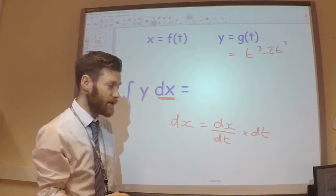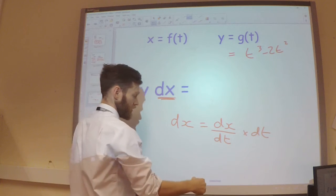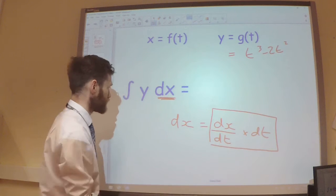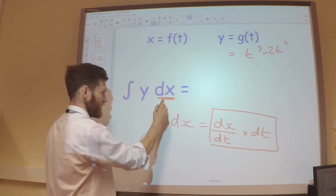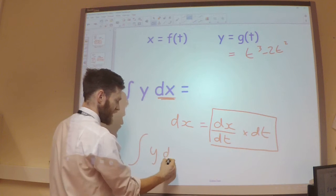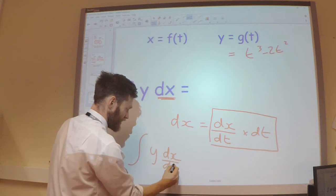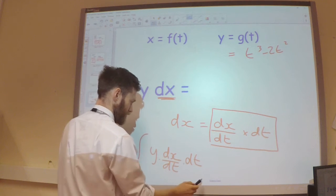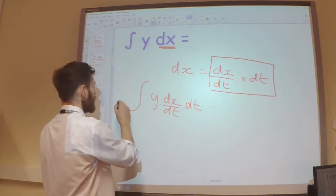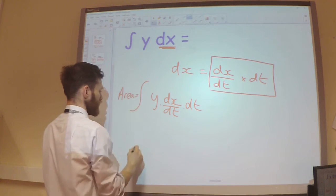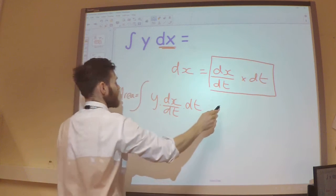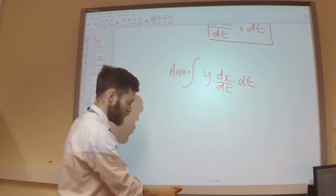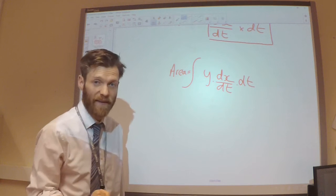This then allows me to replace my dx here with this. So I can replace the dx with a dx/dt multiplied by dt. This is my general rule for finding the area underneath a curve when it has been expressed in terms of parametric equations.